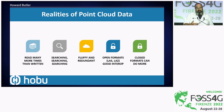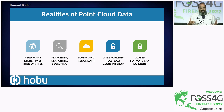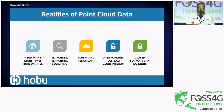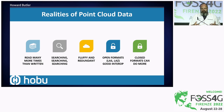Point Cloud data is fluffy — a billion-point scan of the Duomo: taking a point out of it does not materially change the information content of that data. Data formats organized with that reality in mind can do a lot. The open formats in our ecosystem — LAS, LAZ, E57 — have pretty good interoperability, especially for the geospatial LiDAR domain. But there are closed Point Cloud formats that can do more.